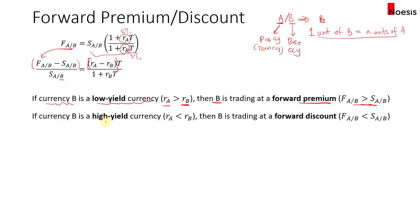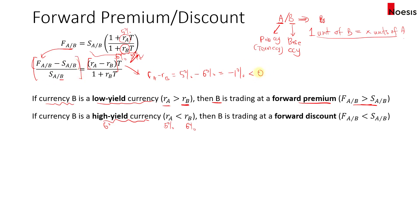If currency B is a high yield currency relative to A, then we expect the opposite. The interest rate for B might be 6% versus 5% for currency A. In this case, the forward rate will be less than the spot rate. For example, R_A minus R_B = 5% minus 6% = negative 1%. When this difference is negative, that means it's a forward discount — the base currency is trading at a forward discount.